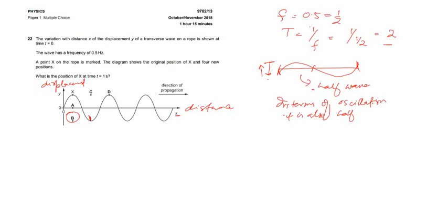The diagram shows the original position of x and four new positions. What is the position of x at time t equals 1? One thing is for sure: if the rope is marked at x, while in a progressive wave the particles do not move along with the wave.